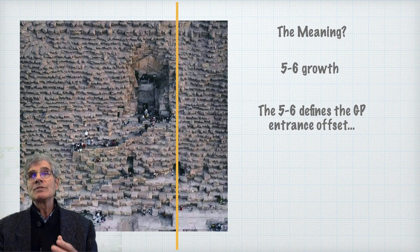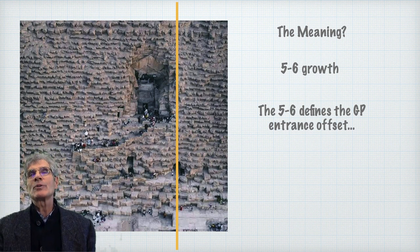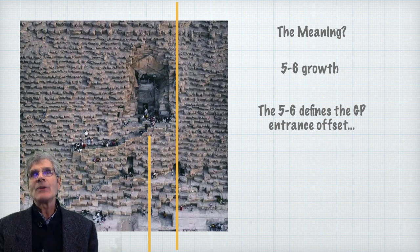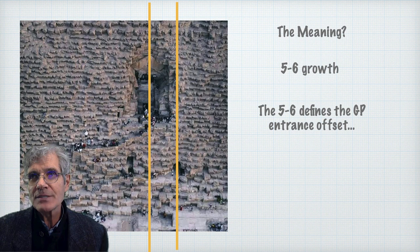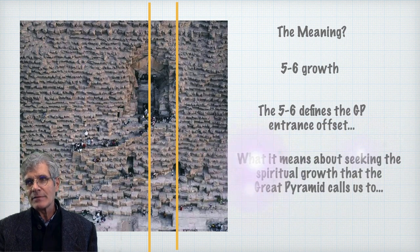There is al-Mamun's chopped-in intruder entrance, which is put right in the center of the pyramid. And there's the center, right through the chevrons, of the original entrance to the Great Pyramid. It is offset. It is offset.